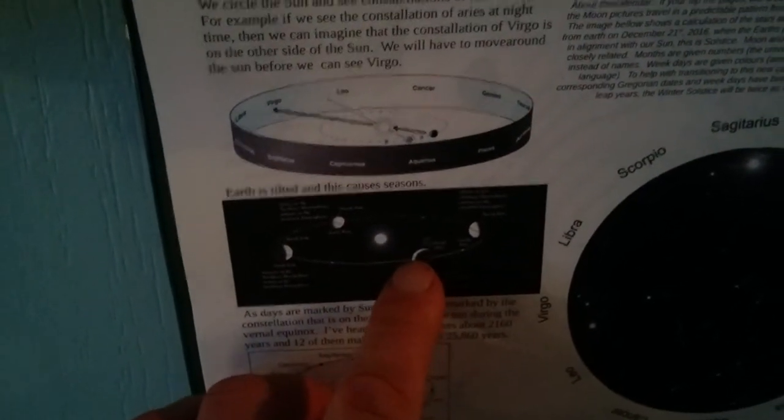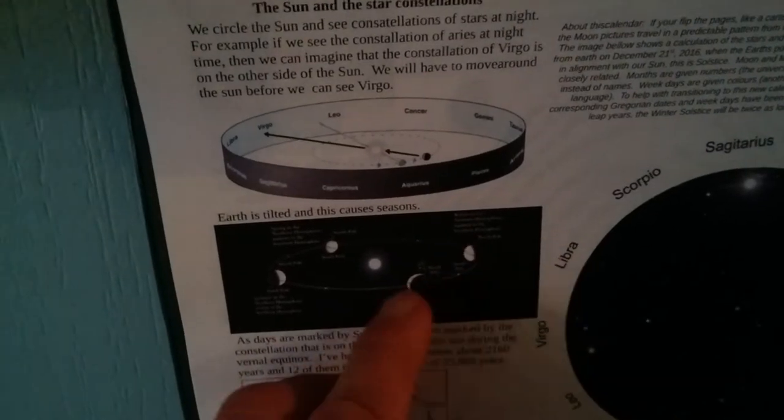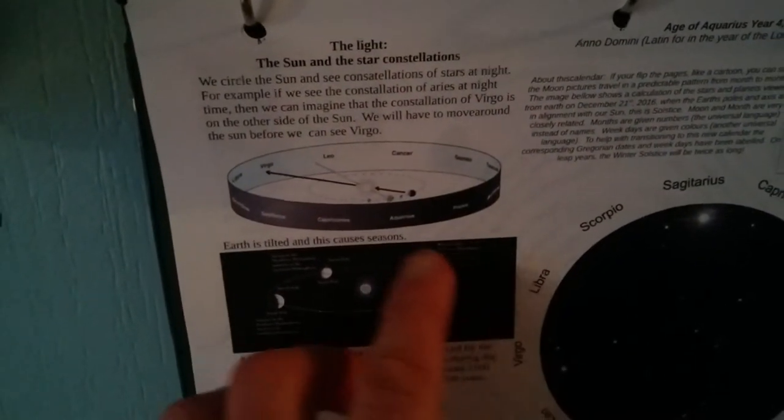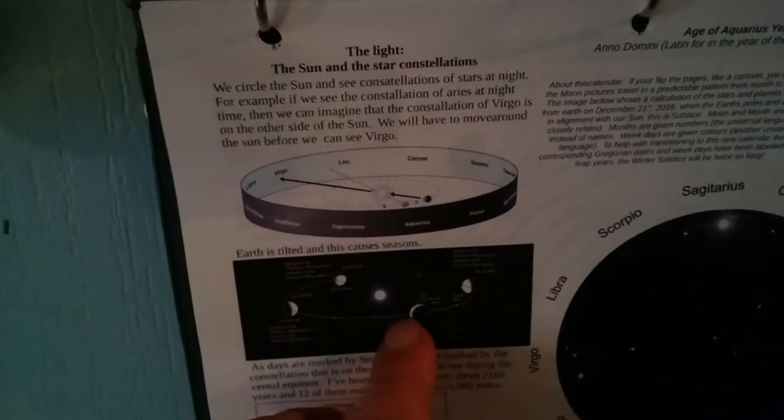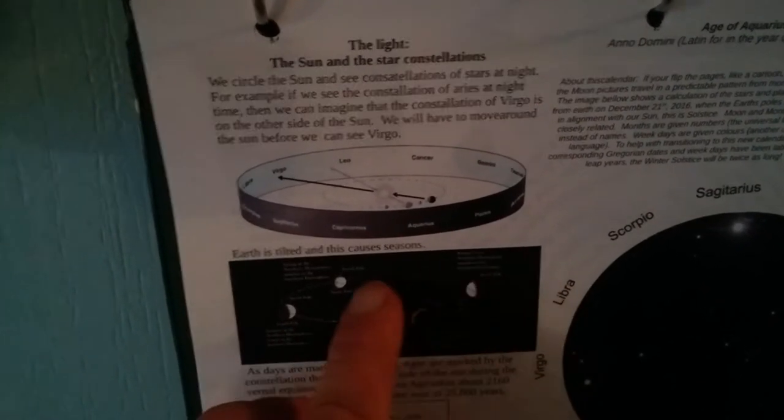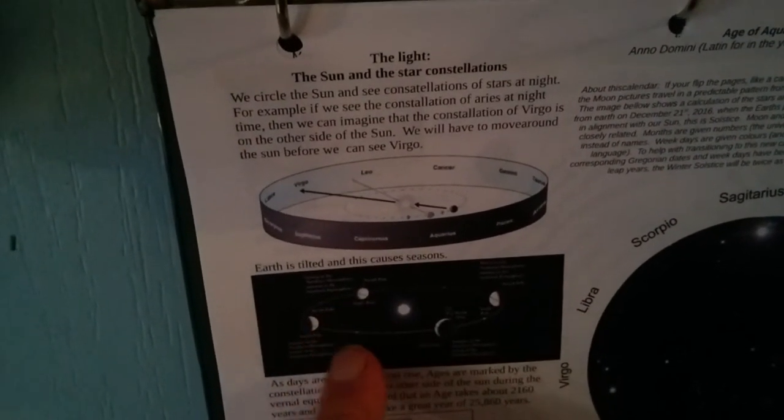It talks about the seasons and how they work, how the Earth is tilted on a little bit of an angle as it travels around the Sun, and that's why in the Northern and Southern Hemisphere we experience different seasons.